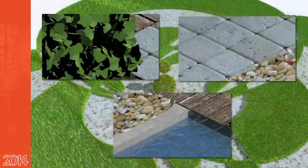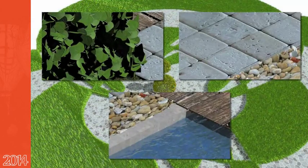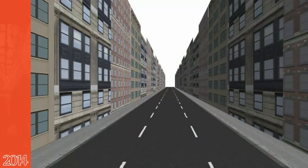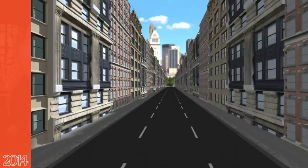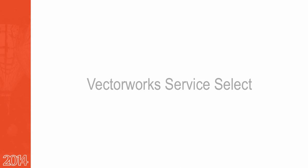Not only can displacement textures emulate different materials and surfaces — like tiles, bricks, water, and more — but entire city blocks as well, all while keeping base geometry to a minimum.